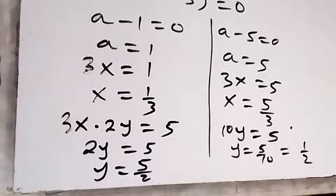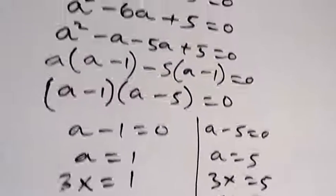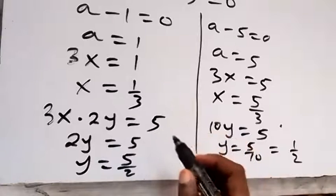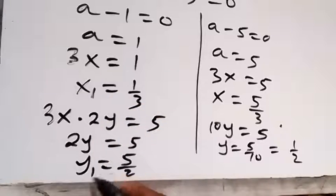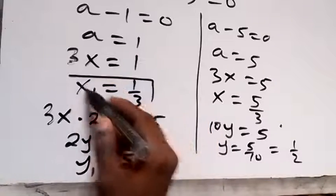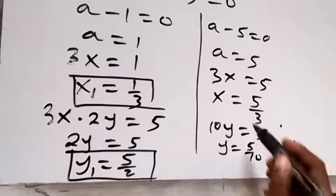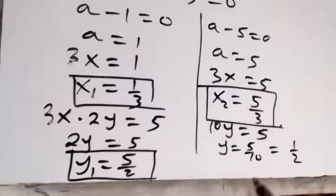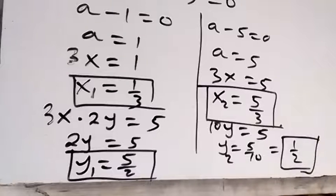Writing out the solutions properly: the first solution set is x₁ equals 1/3 and y₁ equals 5/2; the second solution set is x₂ equals 5/3 and y₂ equals 1/2.